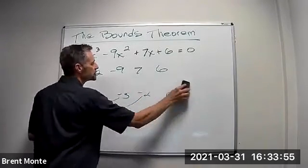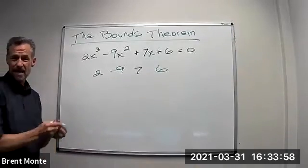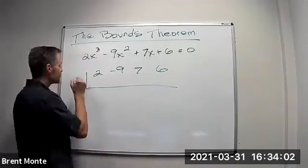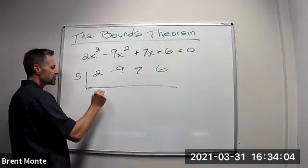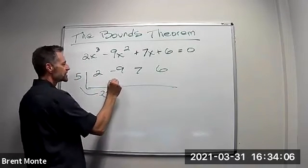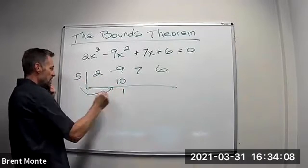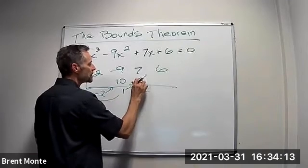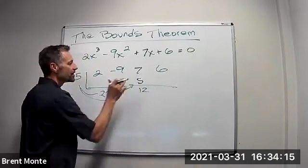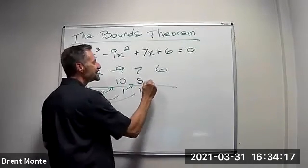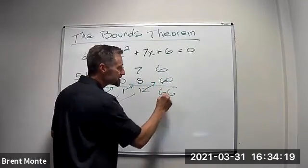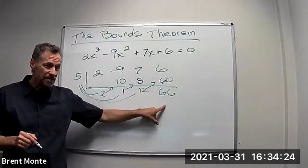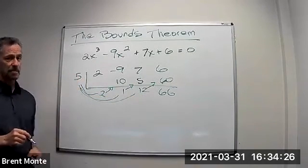Let's try another one. Let's leave those numbers up there. Let's try maybe negative five. Positive five rather. So we'll bring down the two. Five times two is ten, we get a one. Five times one is five, add those up, we get a twelve. Wasn't a very good five, was it? Five times twelve is sixty, we get a sixty-six. Since I used a positive and all these numbers down here are positive, five is an upper bound.